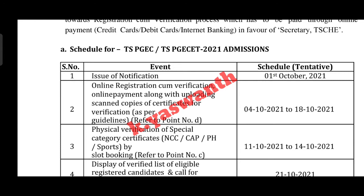We have to check the online registration. If we check the registration, we are eligible — we can check the option. Next, we have to check the certificate verification, including NCC, CAP, and physically handicapped categories.